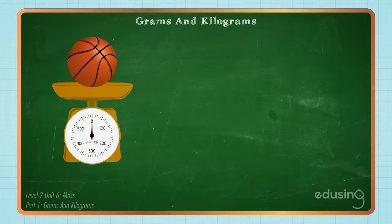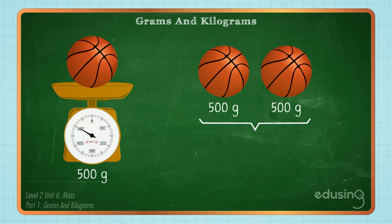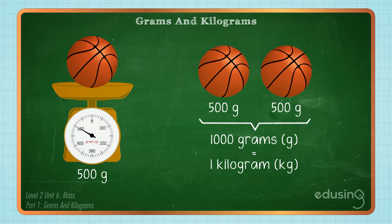This basketball has a mass of 500 grams. Two identical basketballs will have a total mass of 1,000 grams. 1,000 grams is called a kilogram. We write kg in small letters to stand for kilogram.